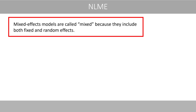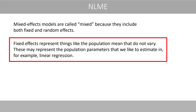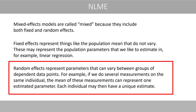Mixed-effects models are called mixed because they include both fixed and random effects. Fixed effects represent things like the population mean that do not vary — these may represent the population parameters that we like to estimate in linear regression. Random effects represent parameters that can vary between groups of dependent data points. For example, if we do several measurements on the same individual, the mean of these measurements can represent one estimated parameter, and each individual may then have a unique estimate.